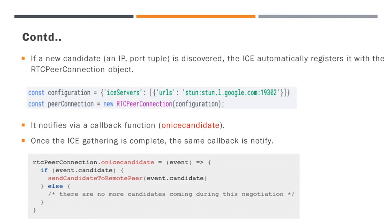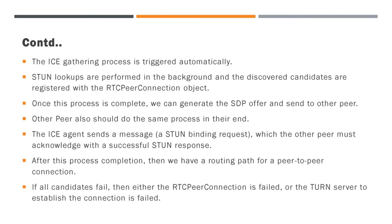Here you can see the piece of code which is used for configuring Google's public STUN server and the callback. You should remember one important thing: the IP port and STUN lookup gathering will happen as a background process. Once it completes all the process, the details are registered with the RTC peer connection object. Finally, when the ICE process is complete, we can create an SDP offer and send it to the remote peer through our signaling server.